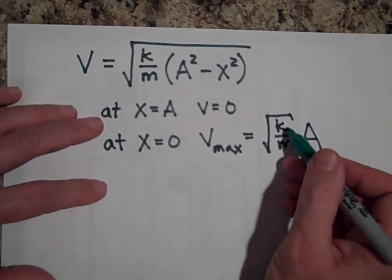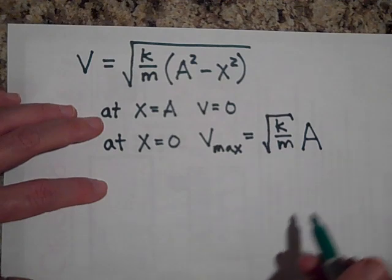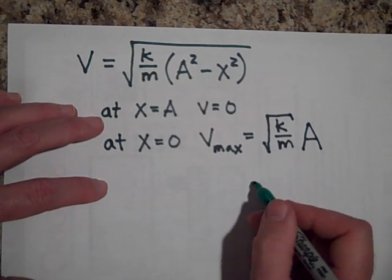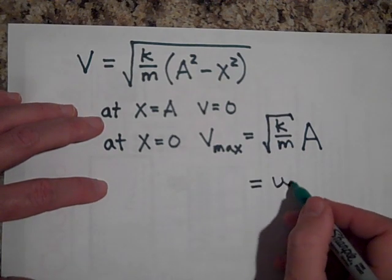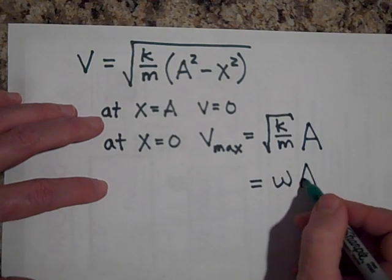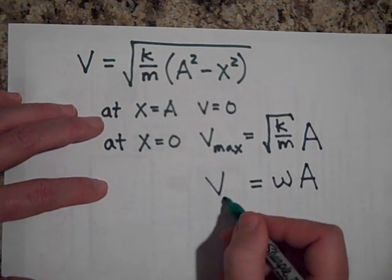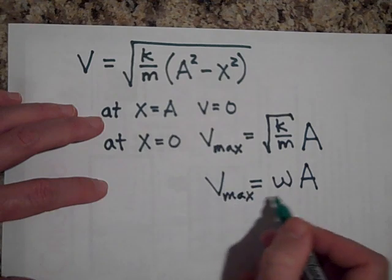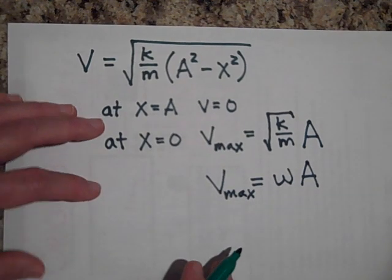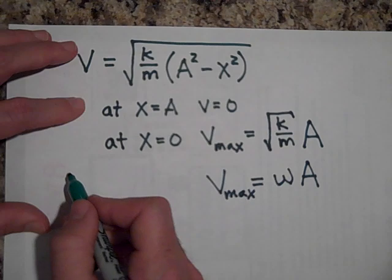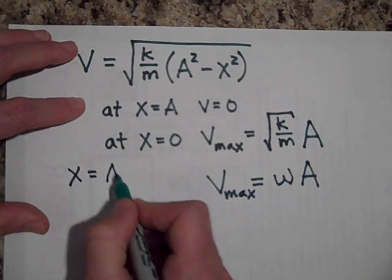Now, are you recognizing this square root of K over M? Because the square root of K over M, that's omega. And we already knew that the V max is omega A. We already knew that. And the reason we knew that is because of X equals A cosine omega T.